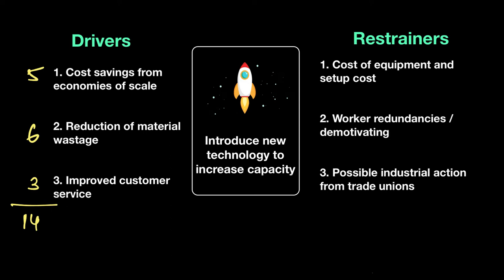On the restrainers: cost of equipment — the company has some money and will only need a small loan, so let's give that a 5. Workers are a big part of an organization; if they get demotivated that's troublesome, so that gets an 8. Industrial action: I've had a good relationship with the trade union in the past, so I'll give that a 2. Totaling up: 8 plus 5 is 13, plus 2 is 15. Right now my drivers at 14 are lower than my restrainers at 15, so at this point the business cannot go ahead with this strategy.